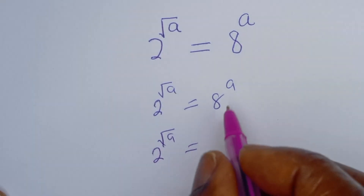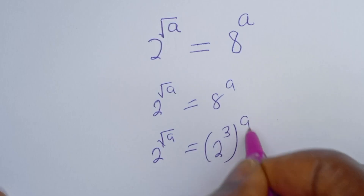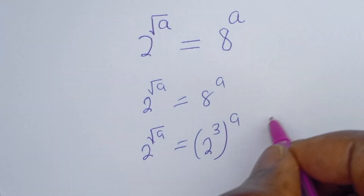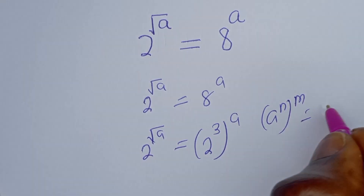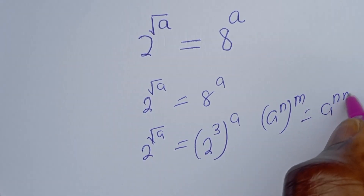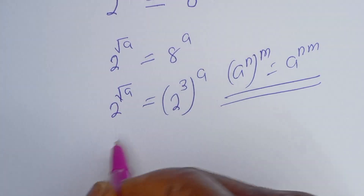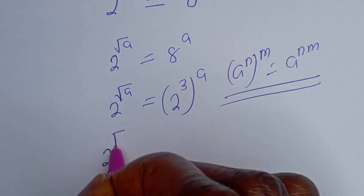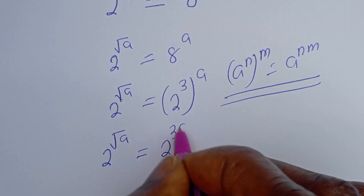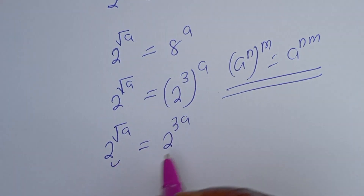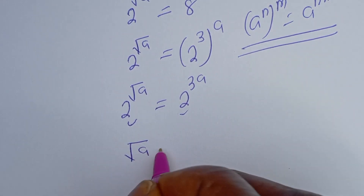This will be equal to — it can be written using the exponent rule: if you have a raised to power n, to the power of n, this is equal to a raised to power n squared. Then this can be written as 2 to the power of square root of a is equal to 2 to the power of something, and because of the same base we can equate the exponents.